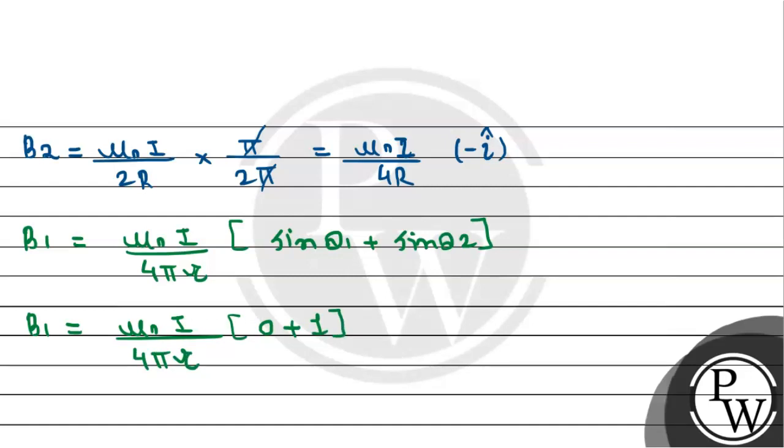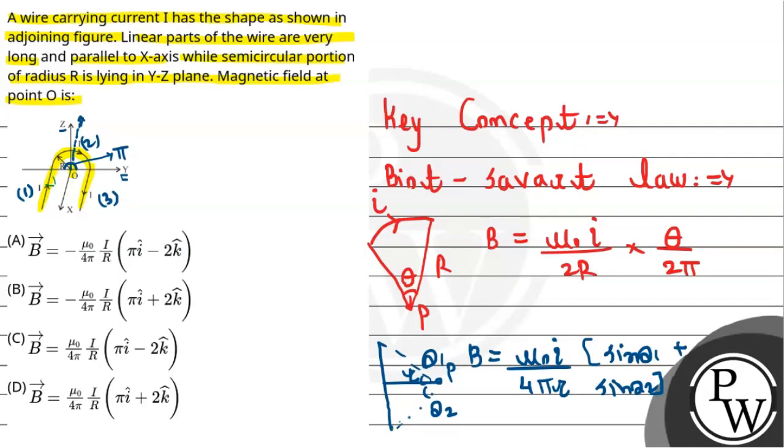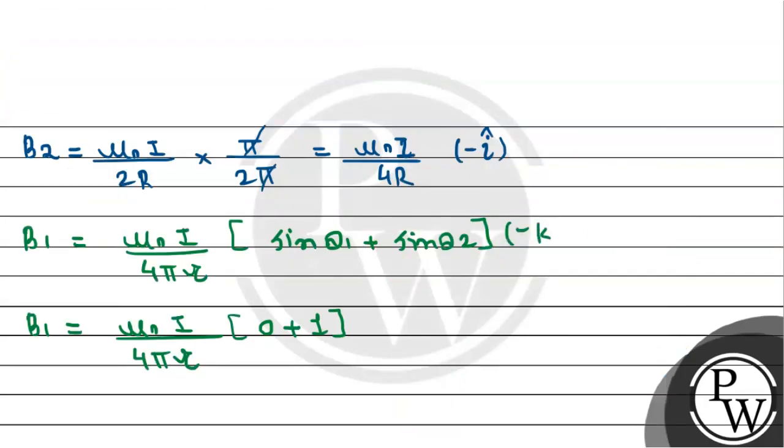This becomes mu naught I divided by 4 pi R times sine 0 plus sine pi by 2, which equals 1. For the directional vector, since this infinite current carrying wire is parallel to x-axis and current flows along x, the magnetic field at this point will be in negative z direction, minus k hat.